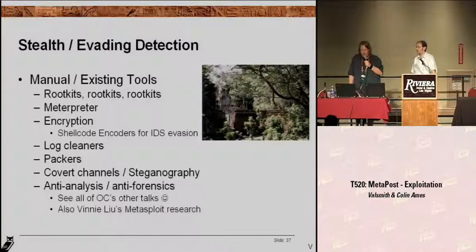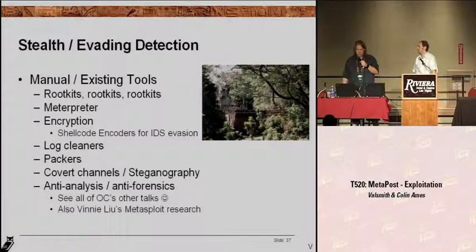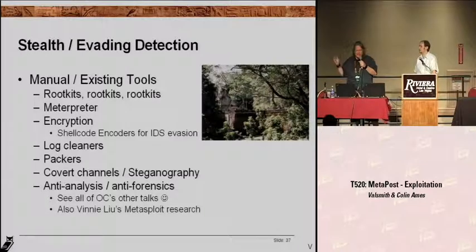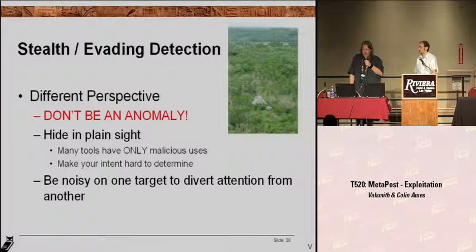There are lots of tools for evading detection. Rootkits is the big one everyone talks about. Meterpreter is a Metasploit module — basically one of the payloads you can run — and it's an amazing tool for evading detection. There's encryption like Shikata Ga Nai and some of the other encoders for exploits, which help with IDS evasion, and log cleaners and all the standard stuff. Our perspective on stealth is: don't be different, don't be an anomaly, don't be something strange on a system. Hide in plain sight. Make all of your tools and all your behavior ambiguous.